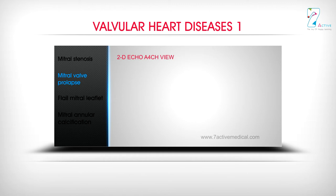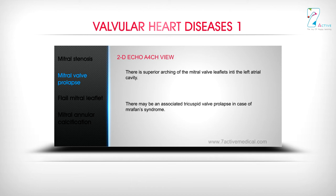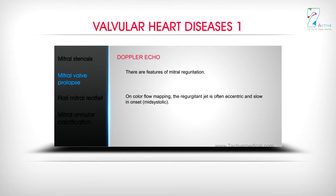2D Echo A4CH View: There is superior arcing of the mitral valve leaflets into the left atrial cavity. There may be an associated tricuspid valve prolapse in cases of Marfan's syndrome. Doppler Echo: There are features of mitral regurgitation. On color flow mapping, the regurgitant jet is often eccentric and slow in onset, occurring mid-systole.